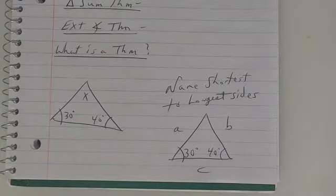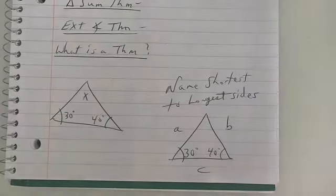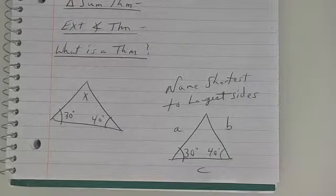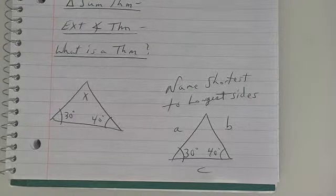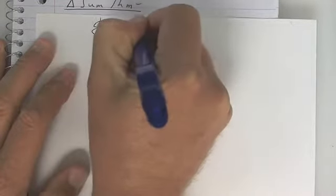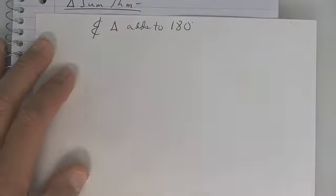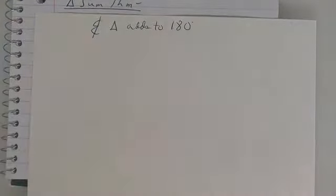All right, the first one says triangle sum theorem. Now let me just explain. And we'll go one by one, so don't feel like you've got to write them all down. So look up here. The triangle sum theorem is very important. And what that says is that every triangle adds up to 180. So write that down. Every triangle adds up to 180.